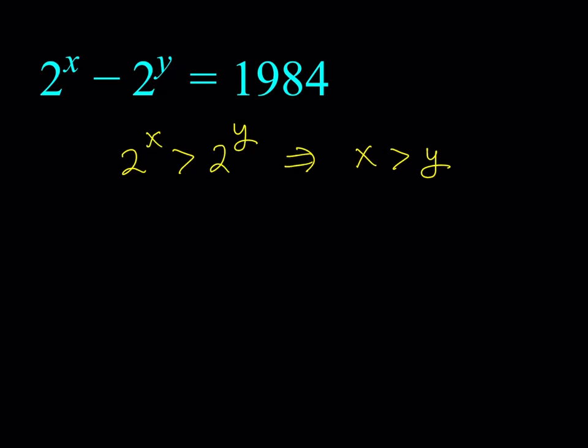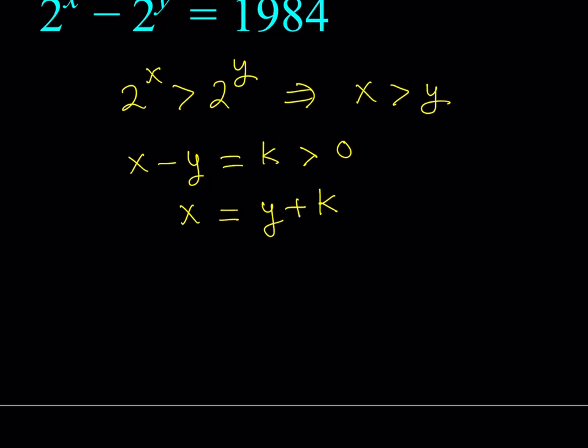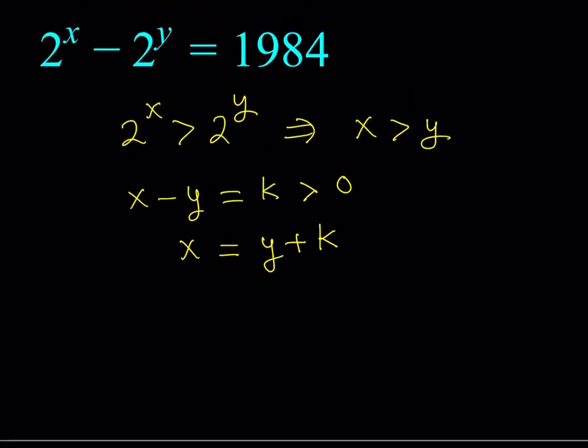Now, how does that help me? Since x is greater than y, their difference is going to be positive. So, I'm going to assume that x minus y is equal to k, where k is a positive integer. And I'm going to go ahead and substitute this into my equation. But I don't have an x minus y. No problem. I can just solve for x and replace x with y plus k in my equation. So, let's go ahead and do that and see what happens.